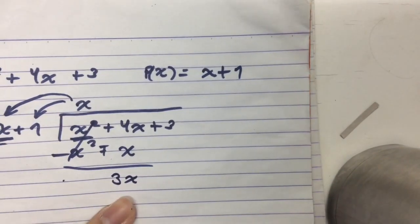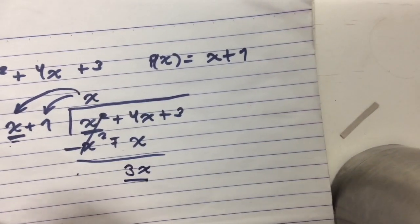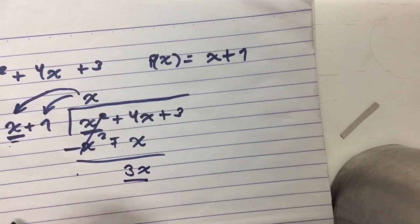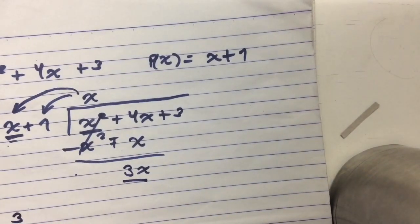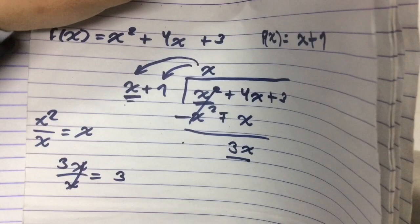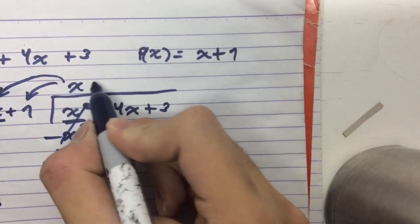And next, after that, we're going to divide 3x now. We're going to divide 3x with the first term. So 3x divided by x would simply be 3 because x crosses out. And so that would be plus 3.